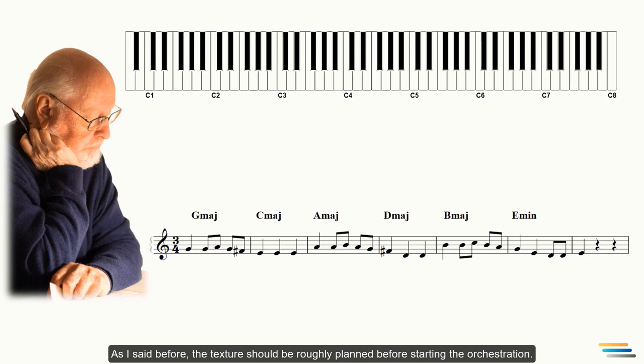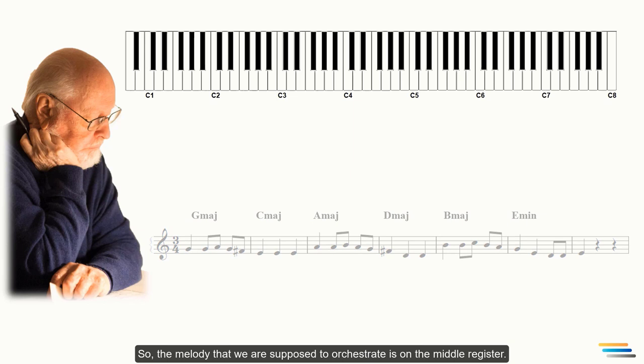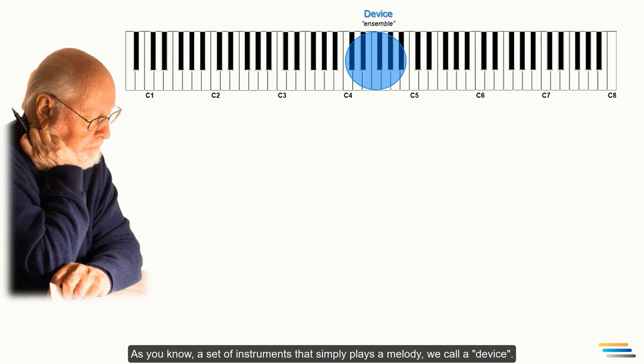So, the melody that we are supposed to orchestrate is on the middle register. As you know, a set of instruments that simply plays a melody, we call a device. In terms of its register, this piece is quite suitable for woodwinds, brass or strings. At the same time, the location of the melody in the middle register creates favorable conditions for us to comfortably accommodate other components of the texture. Look here, there is a wide space below and above the melodic device.